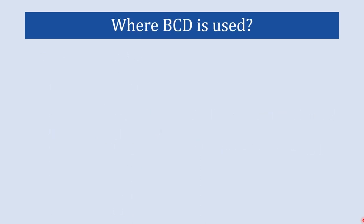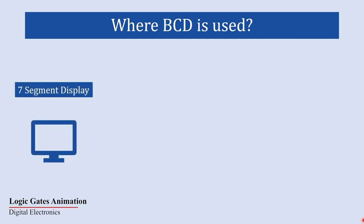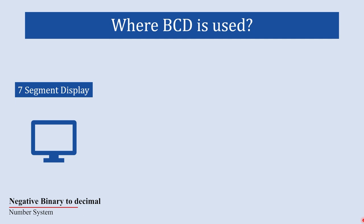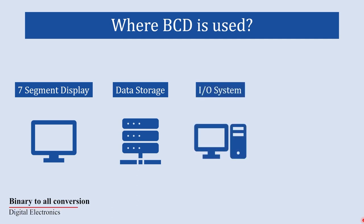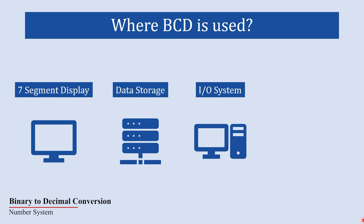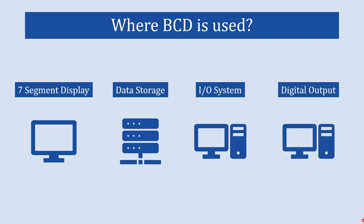Now let's see where this BCD code is actually being used. BCD code is commonly used in digital display systems like seven segment displays, where each digit is encoded in BCD and then translated into signals that activate a specific segment in the display to represent the corresponding digit. Another application of BCD code is data storage, where decimal values need to be stored in a form that's more human readable. BCD code is also employed in some input and output systems where human-readable decimal inputs need to be processed or displayed in a digital system without any loss of precision, and BCD code is even used to represent the digital output corresponding to an analog input.